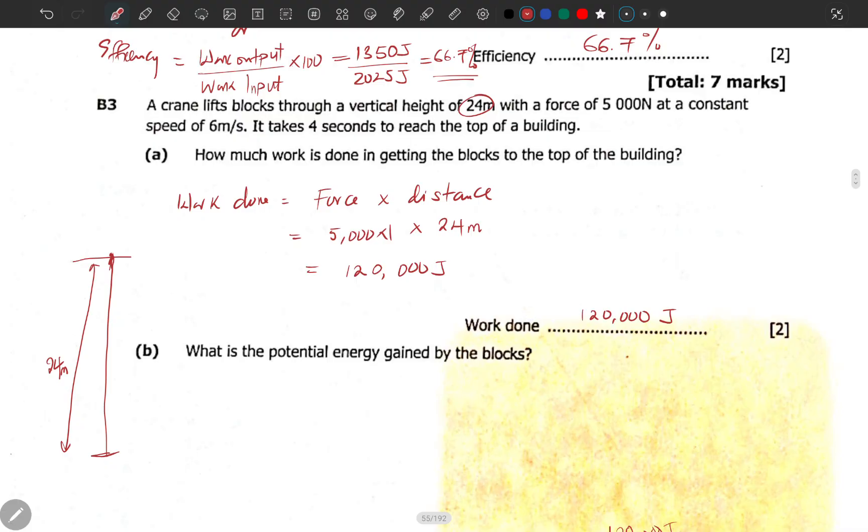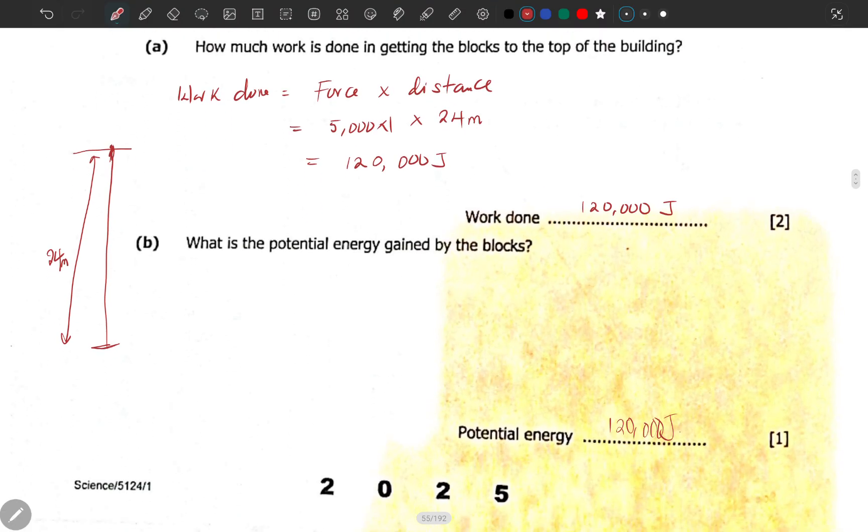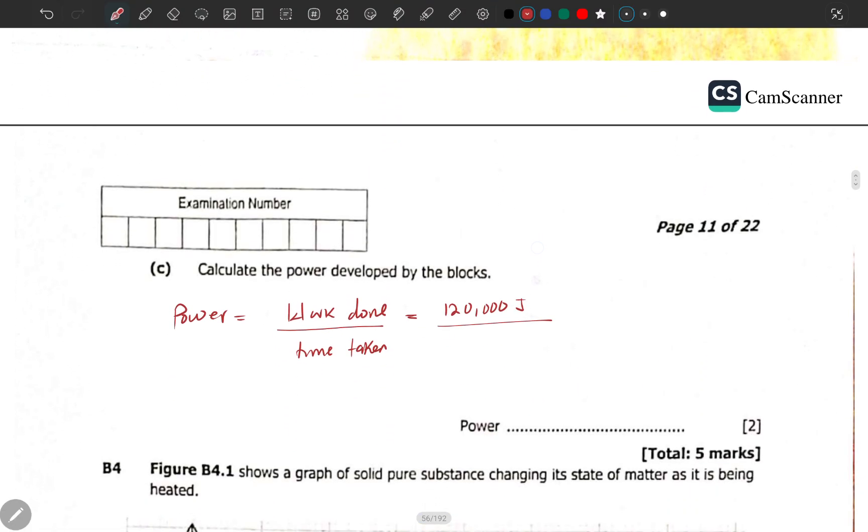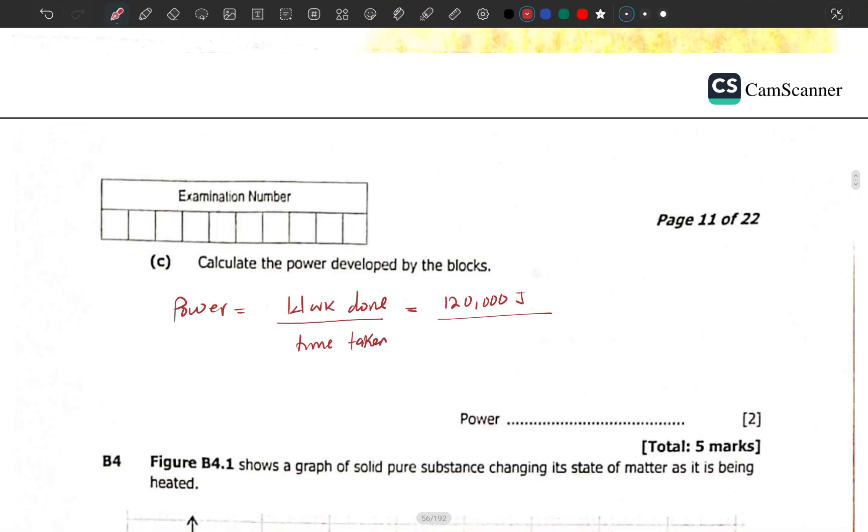The time has been given to be 4 seconds. Well, speed is not doing anything here, but we can use it to find power. Four seconds, which gives us 30,000 watts.